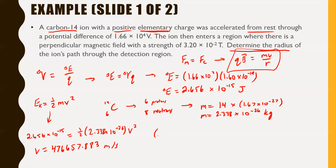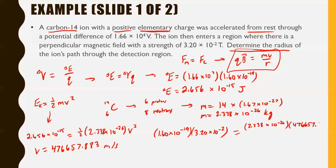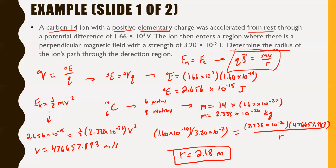Now finally we can use QB equals MV over R. Q is 1.60 × 10⁻¹⁹, B is 3.20 × 10⁻², M is 2.338 × 10⁻²⁶, V is 476,657.883 m/s, and we solve for R. Calculating this gives R equals 2.18 meters. So the radius of that ion's path through the detection chamber is 2.18 meters — that's a pretty big detection chamber.